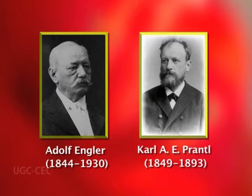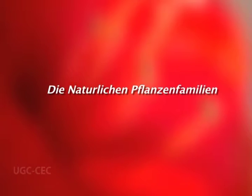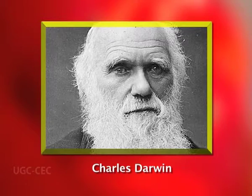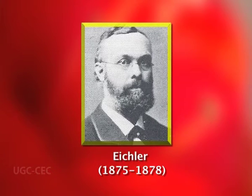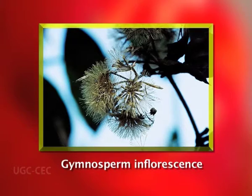Adolf Engler and Karl Prantl of Germany published an evolutionary system in their monograph 'Die Natürlichen Pflanzenfamilien.' Their classification is based on evolutionary sequence as well as genetic relationships among different groups of plants. It employs as many taxonomic characters as possible. Charles Darwin's concept of the origin of species had given enough stimulus for the creation of an evolutionary system of classification. Engler and Prantl made attempts to rectify the shortcomings of Eichler, Bentham, and Hooker's classification.